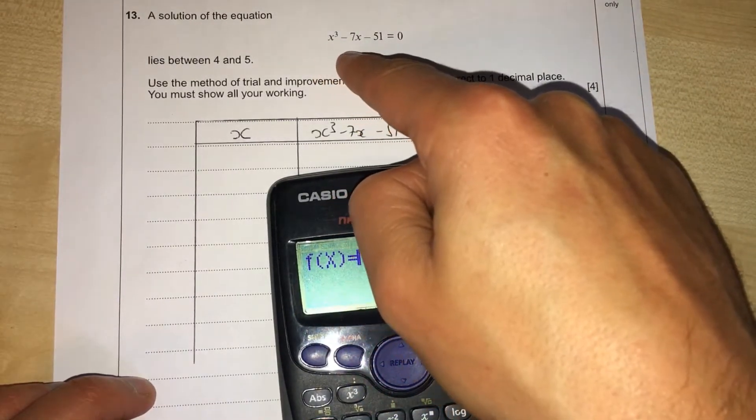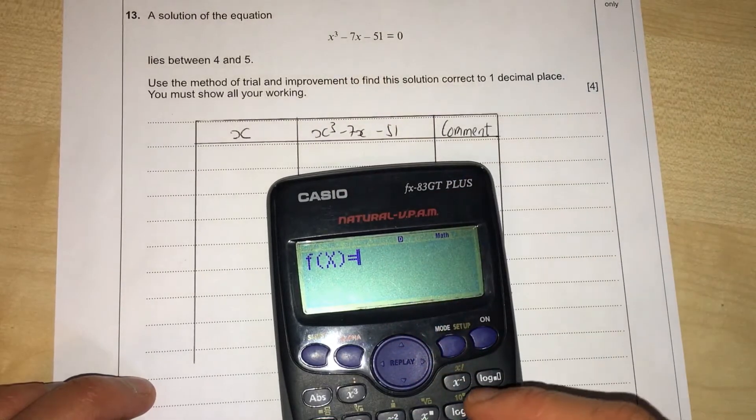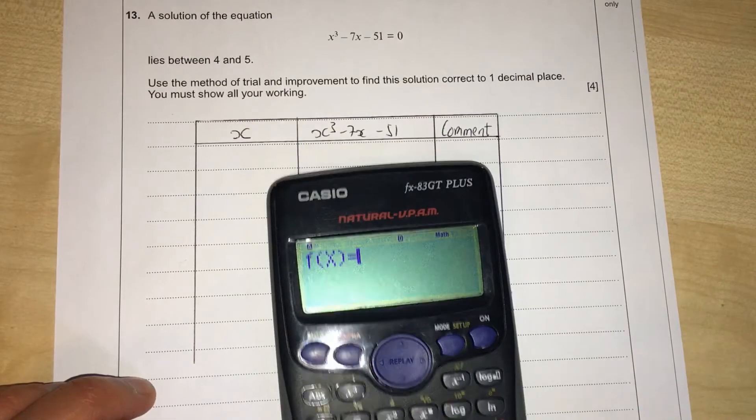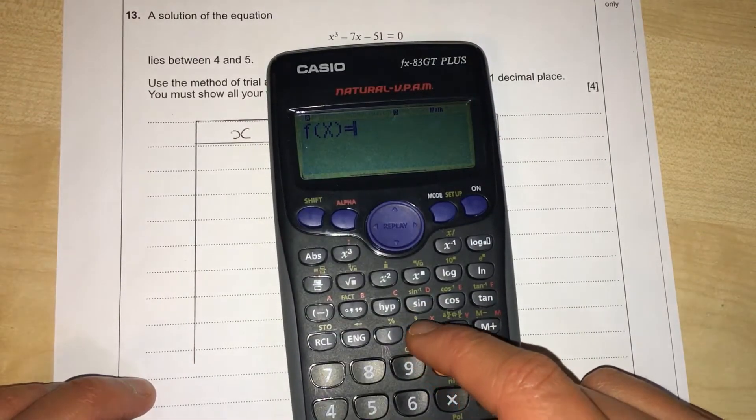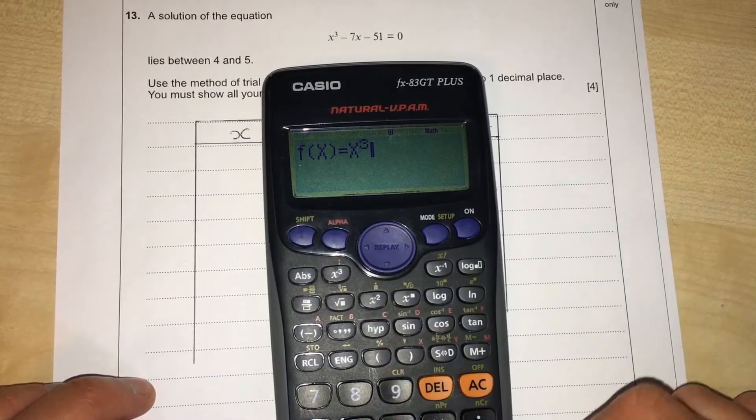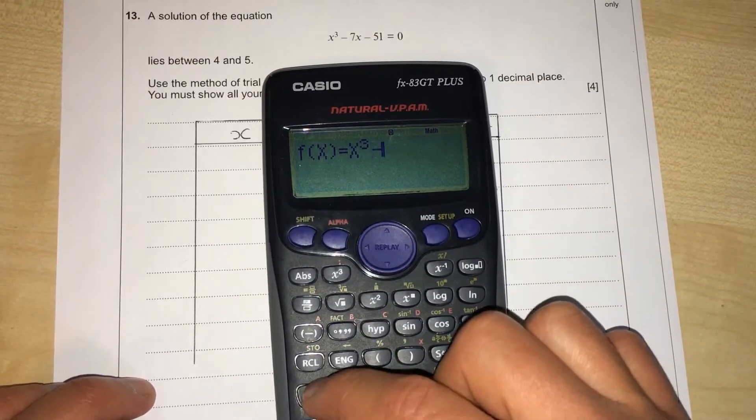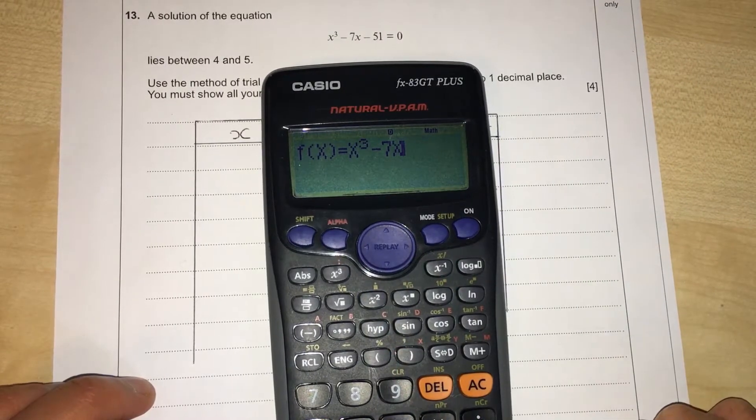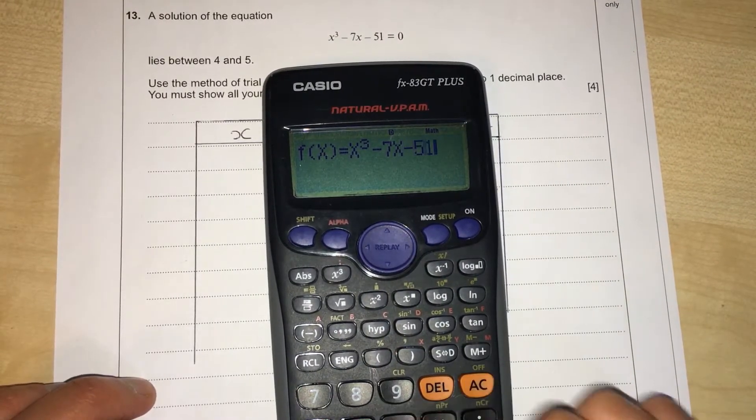We'll go alpha and find the X button, which is just here where the bracket is. So we've got X cubed, take away 7X. We're going to get alpha and press that X again, and then we're going to take away 51.